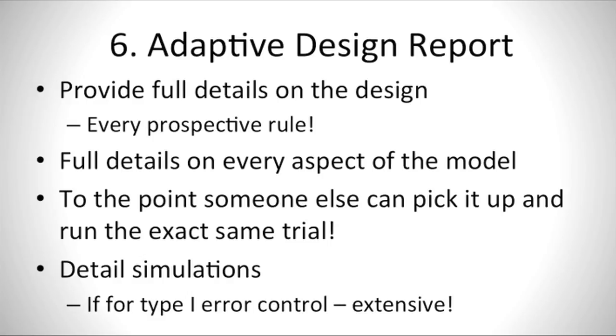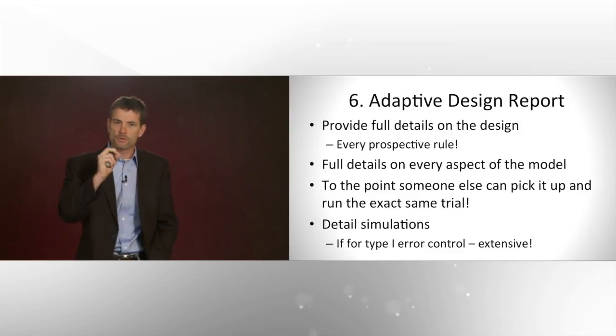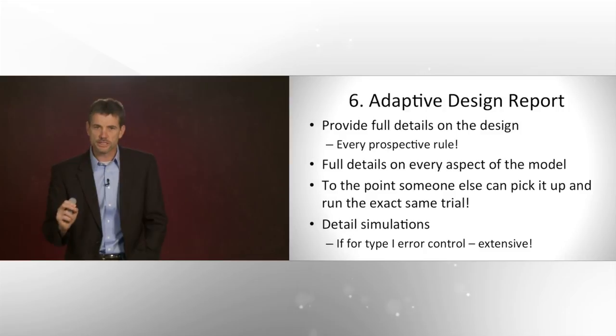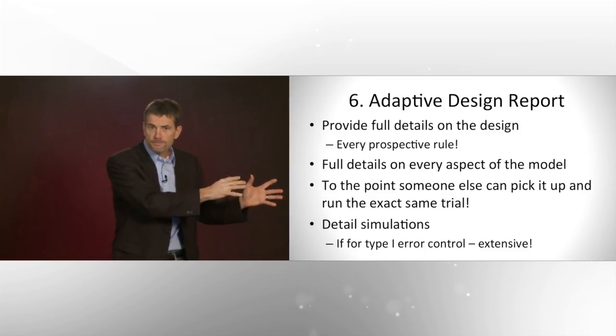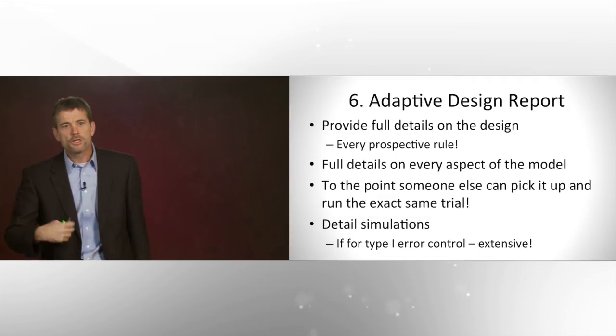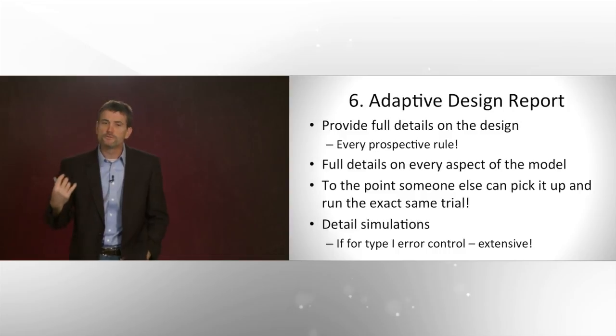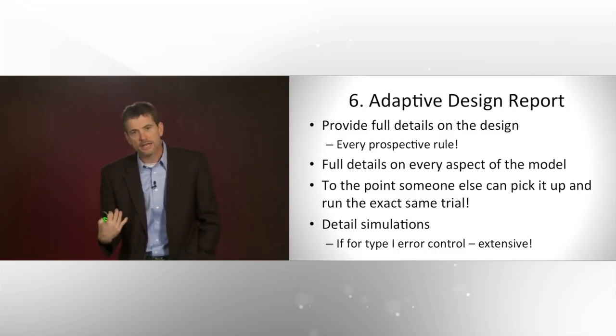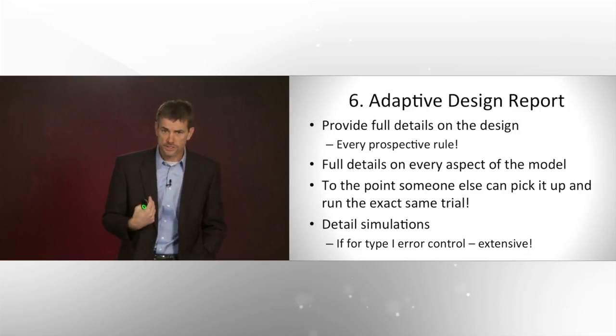Now the communication is an adaptive design report. You write out the design completely prospectively. Every detail of the model, all the priors, all the individual tests if you're doing frequentist statistics. You write it out so that somebody else could pick it up and run exactly the same trial. All of the detail goes into this. This then feeds the protocol, but this can become an appendix to the protocol. It's important for IRBs, for regulators, for CROs running the trial. Now if you're using simulation for proof of type 1 error, you have an extensive section of that. Otherwise, you're going to have a healthy 10 to 20 scenarios that really test the design, that demonstrate what it does. This becomes a huge communication tool for your newly baked adaptive design. So good luck and go get them.